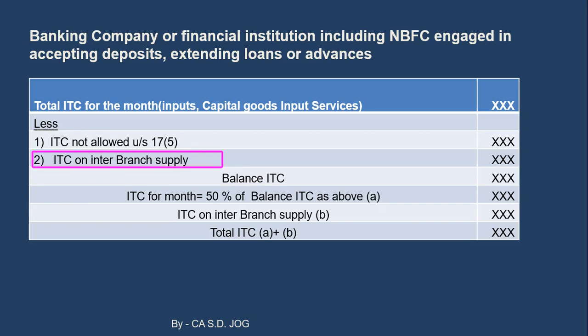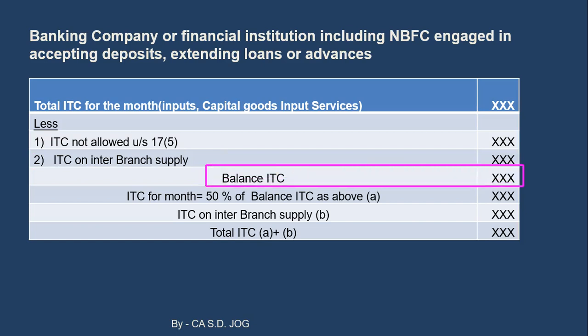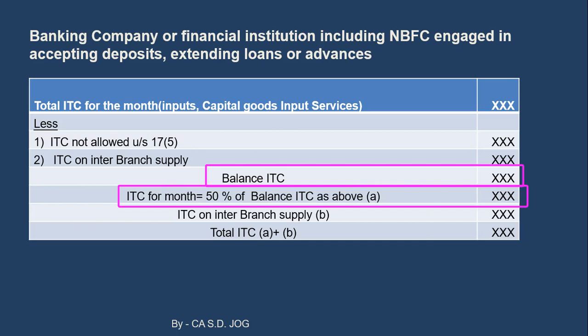The second deduction is input tax credit on inter-branch supplies. As discussed, if Mumbai branch is receiving supplies from Delhi branch, this ITC on inter-branch supply is also removed for the time being, because it will be eligible for 100% input tax credit and will be considered later in the calculation. Whatever balance amount of ITC remains, the ITC for the month will be 50% of that balance. Call this amount A — that is 50% of balance ITC.